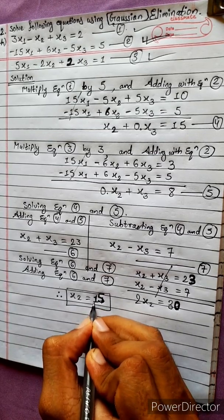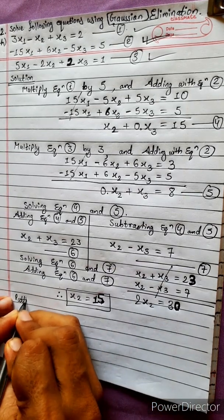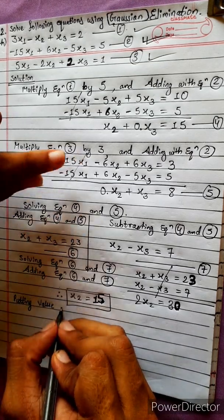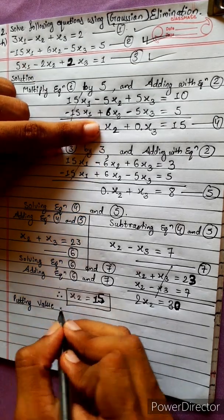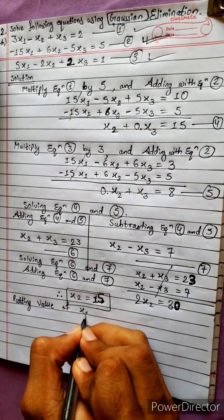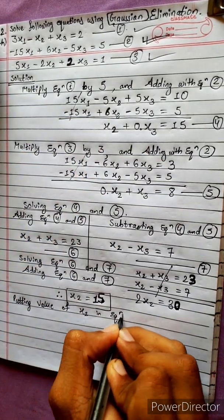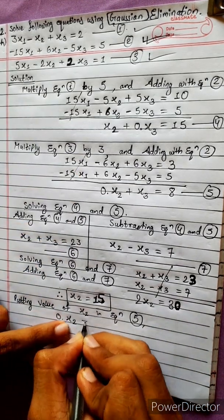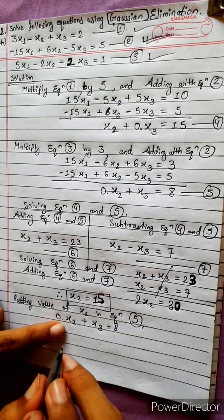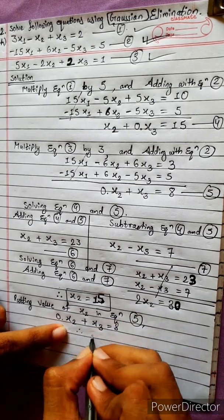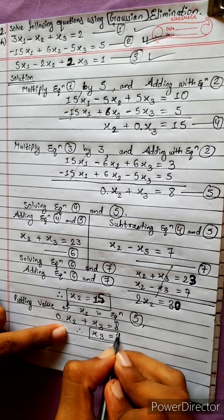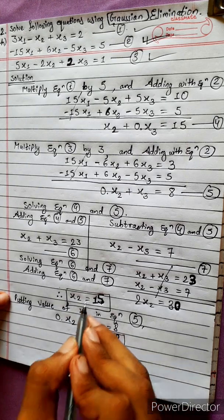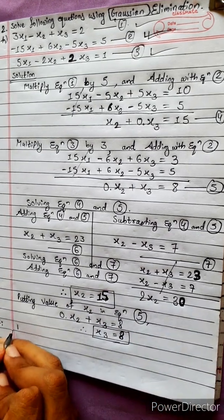Therefore x2 equals 15. Now putting this value into equation 5: 0 times x2 plus x3 equals 8. Since 0 times something is 0, therefore x3 equals 8.